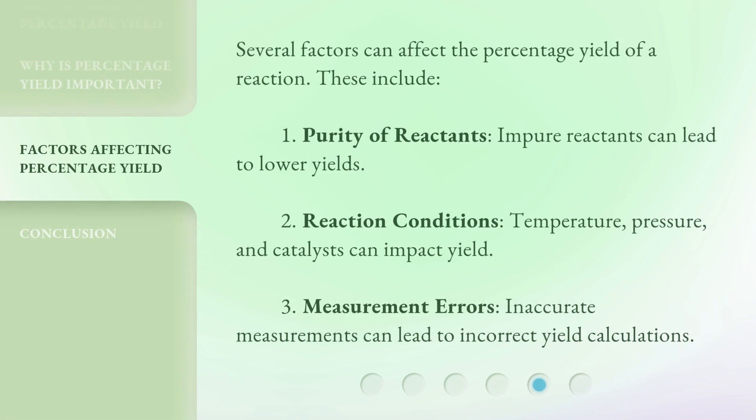Several factors can affect the percentage yield of a reaction. These include: 1. Purity of reactants - impure reactants can lead to lower yields.